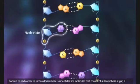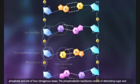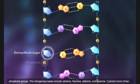Nucleotides are molecules that consist of a deoxyribose sugar, a phosphate, and one of four nitrogenous bases. The phosphodiester backbones consist of alternating sugar and phosphate groups.